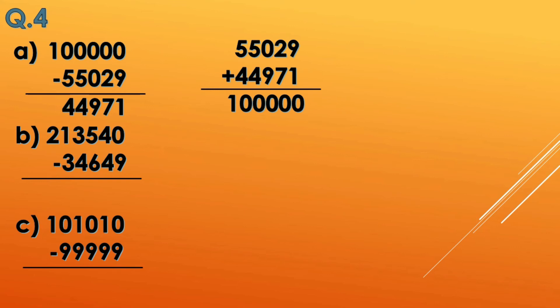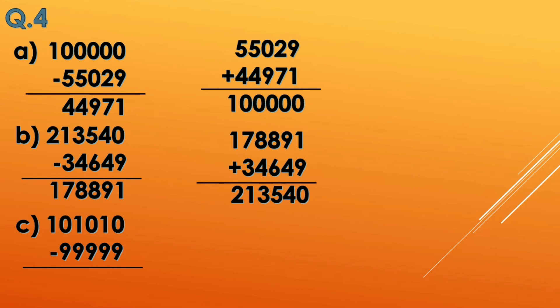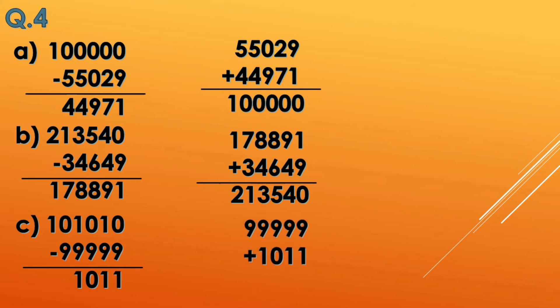Next, 2 lakh 13,540 subtracted by 34,649 gives 1 lakh 78,891. To verify, we add 1 lakh 78,891 plus 34,649 and get 2 lakh 13,540. In option c, 1 lakh 1010 minus 99,999 gives 1011. Adding 99,999 plus 1011 gives back 1 lakh 1010.